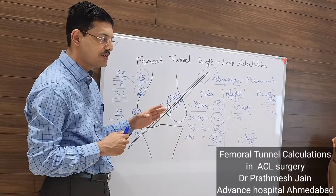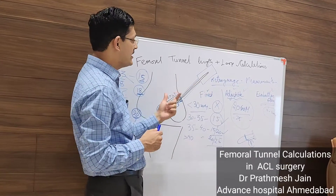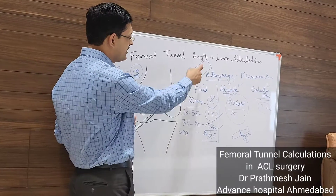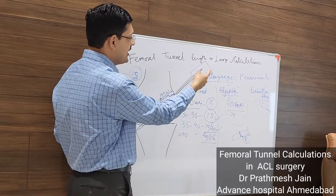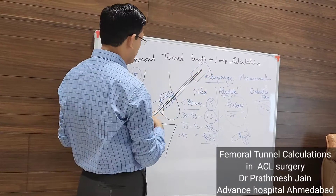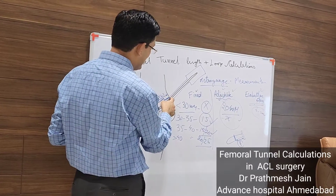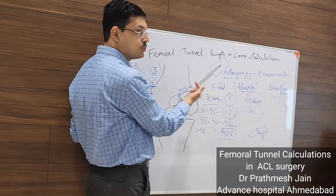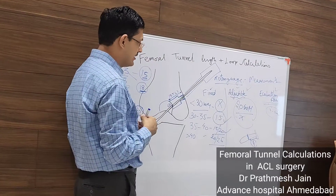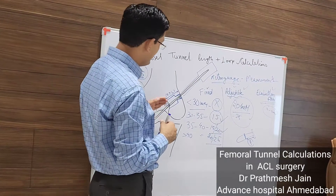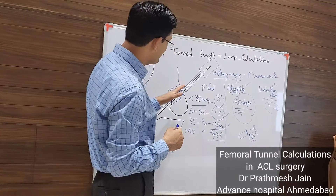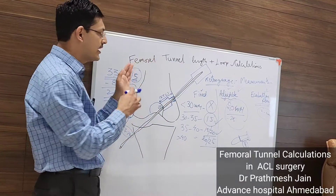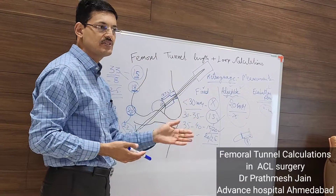The retrograde measurement is better than the antegrade measurement because with retrograde you can measure at the first step. With antegrade, you have to drill with the 4.5 mm reamer first, then measure — and if it is less than required, you have to redo it. With the retro gauge, at the very first step you already know the tunnel length and can organize all your surgical steps accordingly.